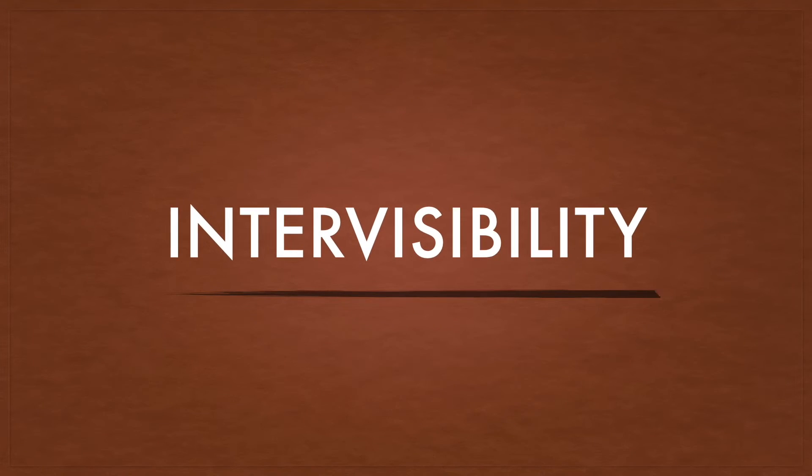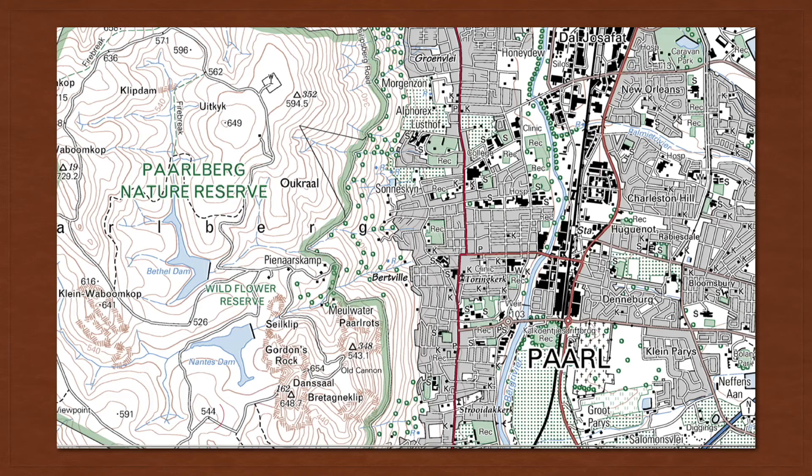Let us recap on what we've learned about intervisibility. Let's look at a topographic map of PAR. We're going to mark in four areas.